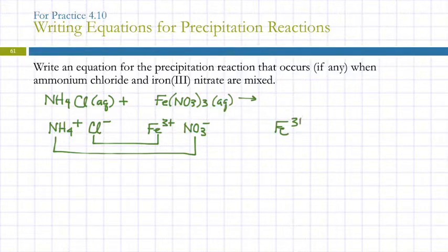So Fe3+, we're going to see how he gets along with chloride. And then we're going to see how ammonium hits it off with nitrate. So if I pair these up, what's the formula going to be? FeCl3.